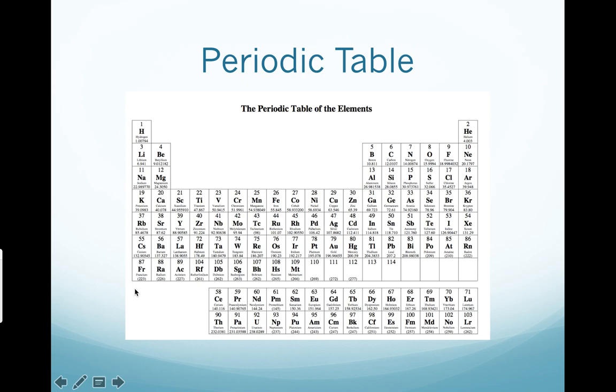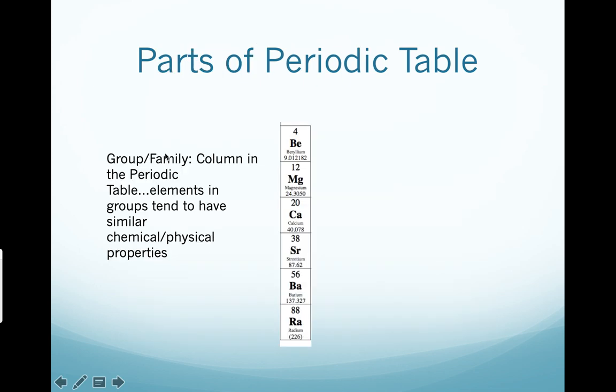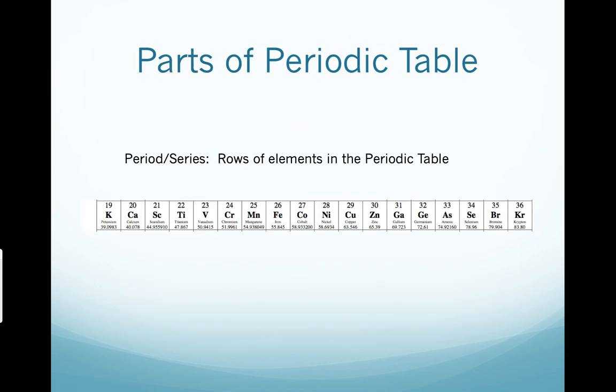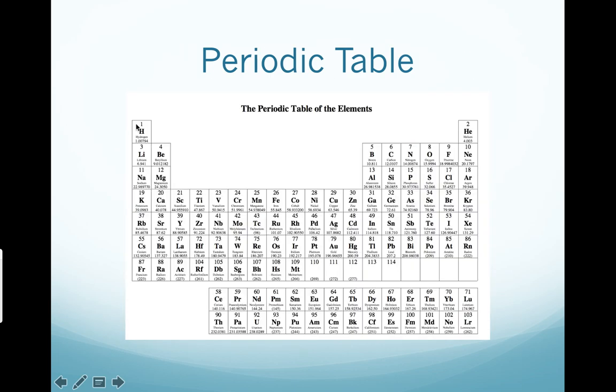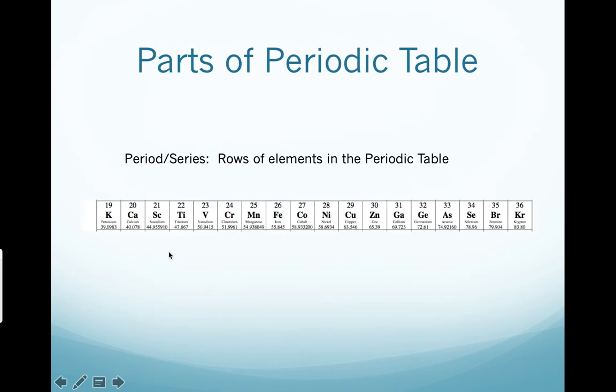But you also can call this a family, like the alkali earth metals. Moving forward. A row, we call this a period, or a series. And as we talked about before, there's seven rows or seven periods in the periodic table.